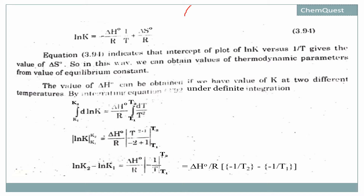For example, we have a y-axis and an x-axis. Along the y-axis we take ln K. This is the dependent variable, since K depends on temperature.